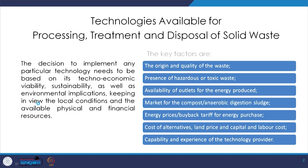We have to know the origin and quality of the waste, and whether there is presence of hazardous or toxic waste in what is going to be treated. We have to know the availability of outlets for the energy produced, since there may be high energy-containing waste items and we need to identify possible outlets for that produced energy. We also have to look at the market for compost or anaerobic digestion sludge — it is not enough to just treat waste and keep stacking the resulting product; we have to determine where it will be marketed.